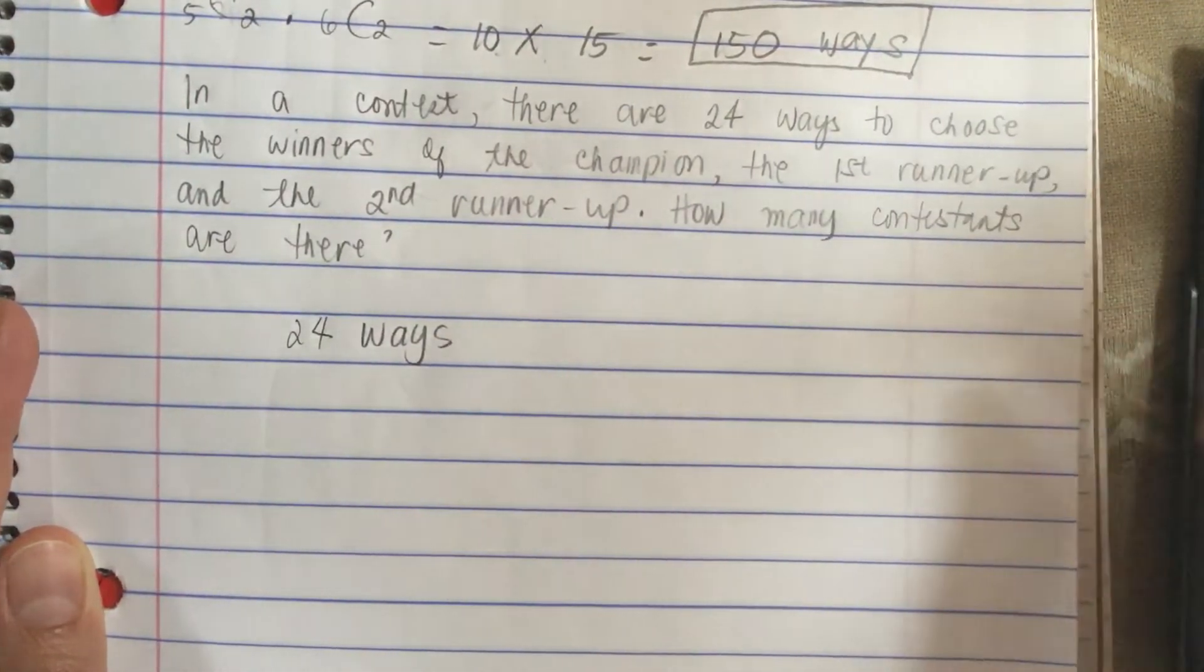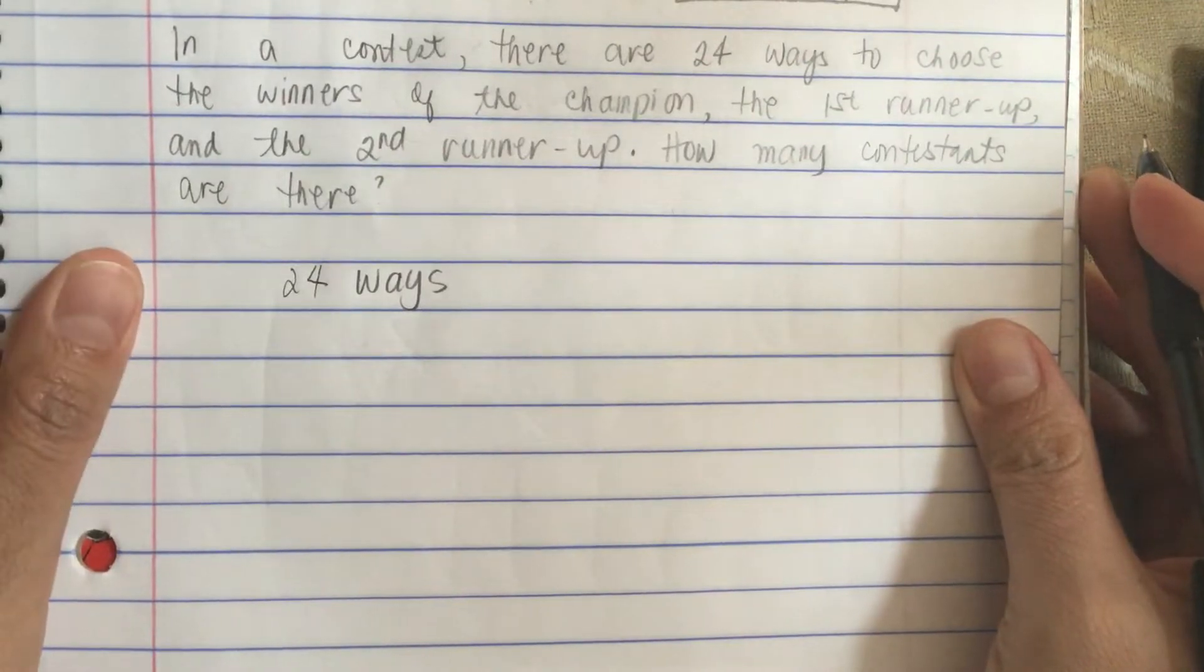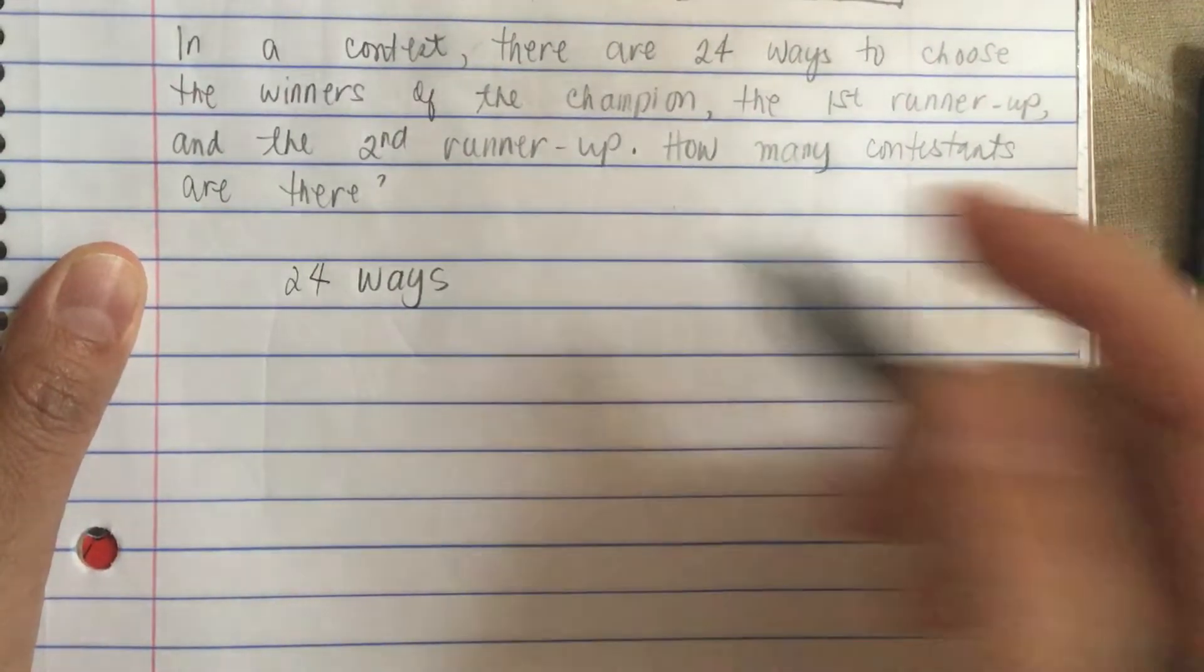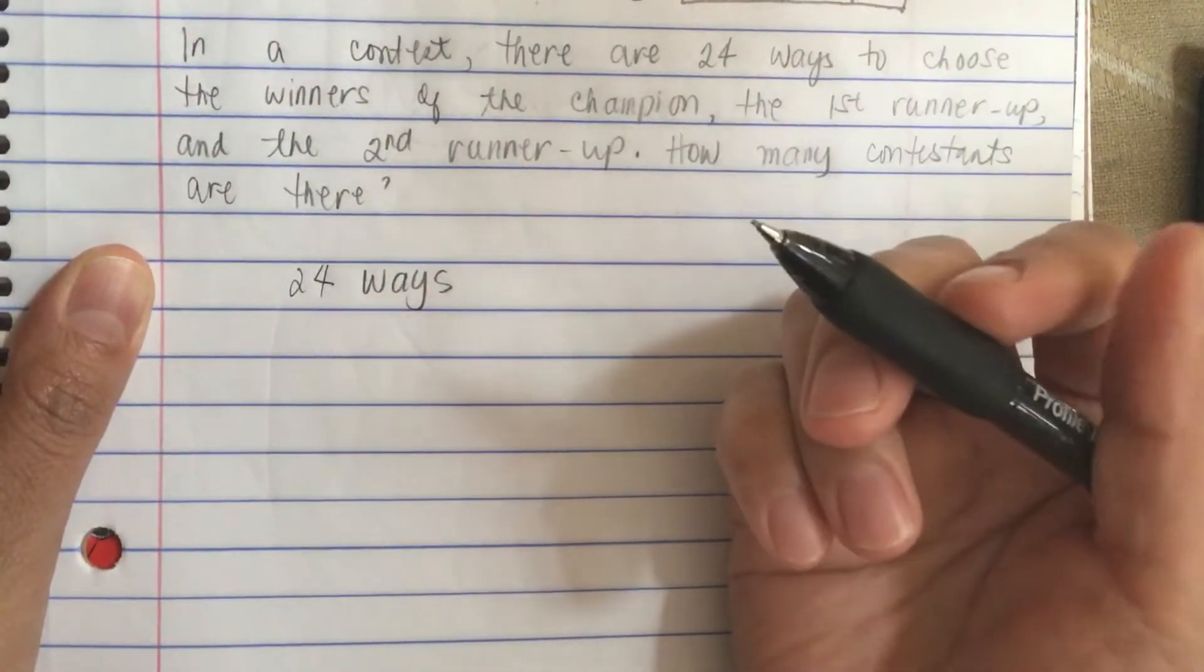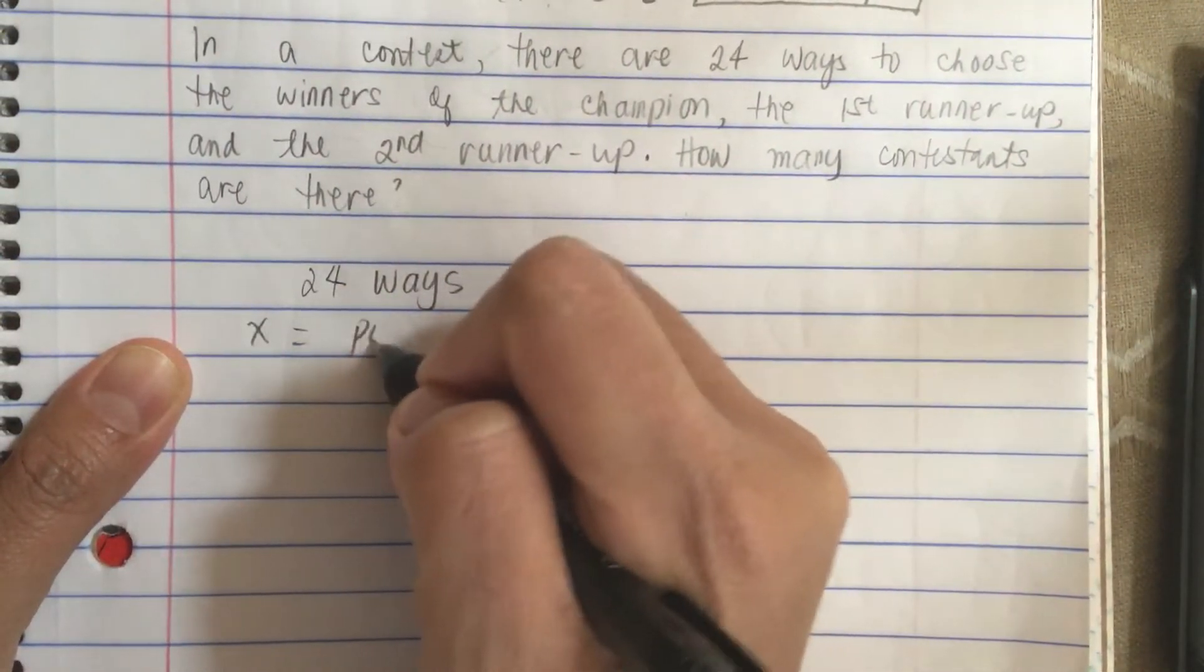So now to solve this problem we just do trial and error. Because if we do like math, so we have x is equal to the possible winners.